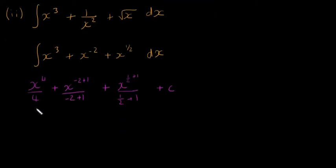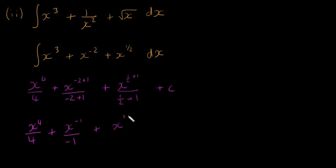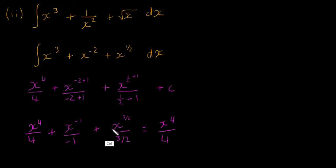Scrolling down to continue: x to the power of 4 over 4 is fine. Then we have x to the power of minus 1 over minus 1, and the next term is x to the power of 3 over 2, divided by 3 over 2. Now, x to the power of minus 1, by the same indices rules as before, is just 1 over x. So minus 1 multiplied by 1 over x gives us minus 1 over x.